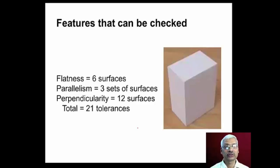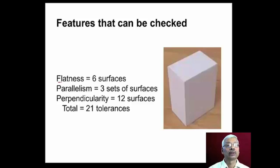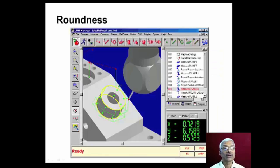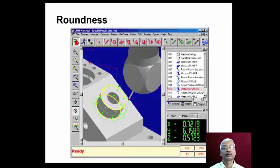Let us discuss what features can be checked using a coordinate measuring machine. We can measure the flatness of six surfaces of a prismatic workpiece. Parallelism of three sets of surfaces can be checked, and perpendicularity between the 12 surfaces can also be checked by CMM. Roundness can be checked — for example, the diameter and roundness of a hole can be measured by selecting data points on the hole's surface.